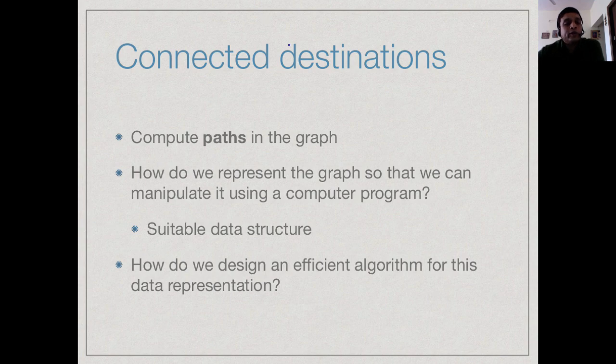Now what do we want to do with such a graph? In this case, we want to compute what we call a path. That is a sequence of edges going from one city to another city where, of course, the direction must be correct. You cannot go backwards across an edge which is flying from A to B. You cannot take the same flight from B to A unless there is another flight. So our first question is, how do we take this picture and put it into form that we can manipulate using a program or an algorithm? We need a suitable data structure to represent this graph.